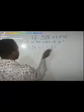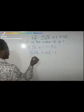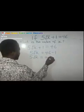Now, let this plus 1 move here. When it moves here, it's going to be 46 minus 1. Then we are going to have 5 root x equals to 45.